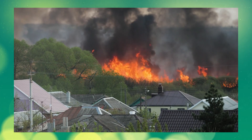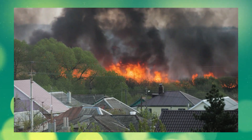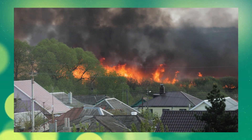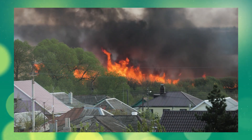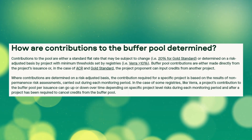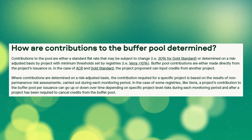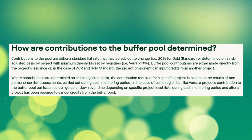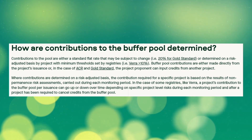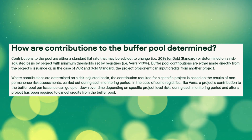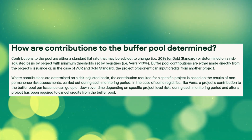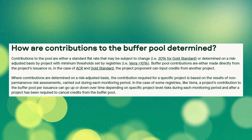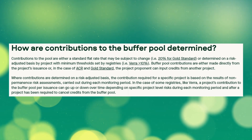Moving on, in case something were to go wrong at a project — say, a portion of a forest gets burned down, but that project was already verified and generating carbon credits — registries do try to prepare for this with a carbon buffer pool. A buffer pool is a stockpile of carbon credits that get used to replace any credits that may get cancelled in this scenario. Contributions to a buffer pool are taken as a flat fee or on a risk-adjusted basis depending on the registry, and tend to be about 10–20% of the credits a project generates.